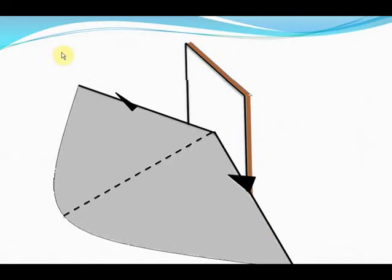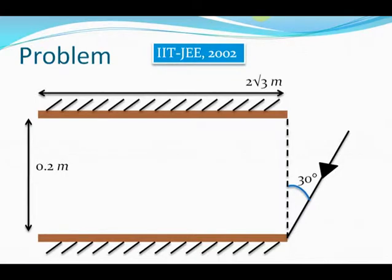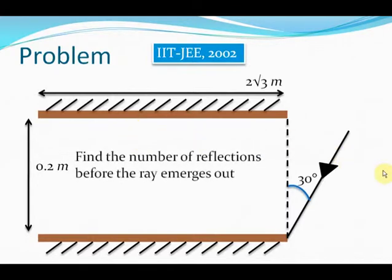Now, I know we've hardly studied anything — in fact, we just began. But already we are ready to solve an IIT problem. Let's solve it then. This question was asked in IIT JEE 2002. In this problem, an incident ray is striking a horizontally kept mirror. We have to find out the number of times this incident ray will be reflected before it leaves this two-mirror system — find the number of reflections before the ray emerges out.